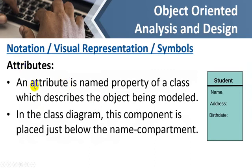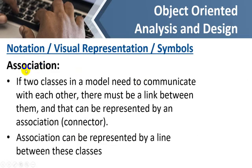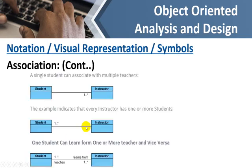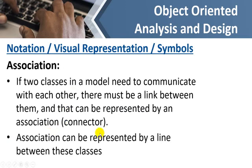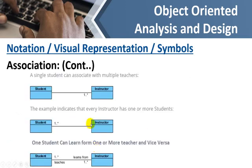An attribute is a named property of a class which describes the object being modeled. For example, the class name is 'Student' and the attributes are name, address, and birth date — this component is placed just below the name compartment. Then we have association: if two classes in a model need to communicate with each other, there must be a link between them, and that can be represented by an association or a connector. Association can be represented by a line between these classes.